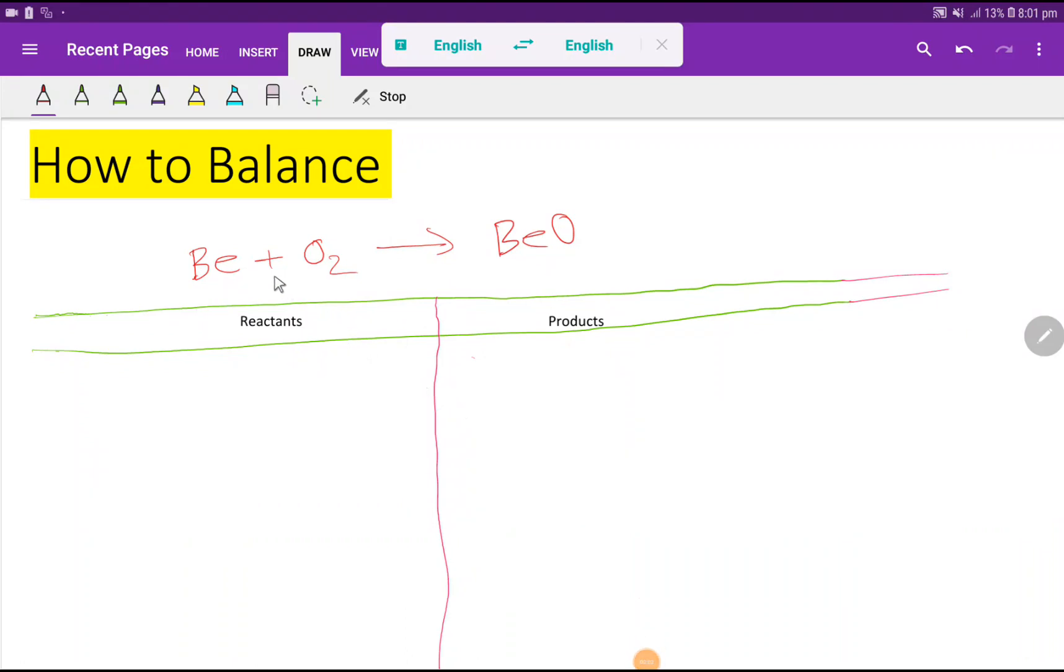Welcome to this class. Today we are going to balance this reaction: beryllium plus oxygen yields beryllium oxide. To balance this reaction we have to do a table like this.